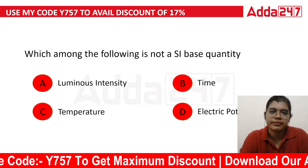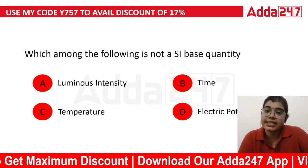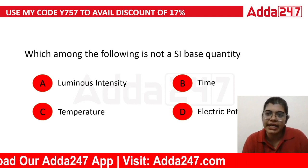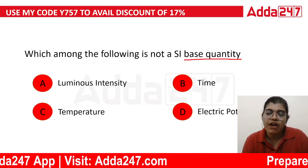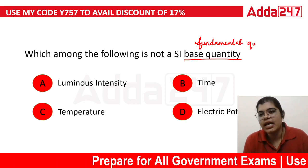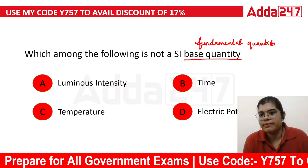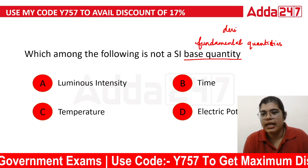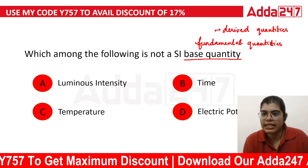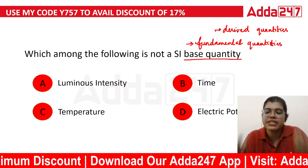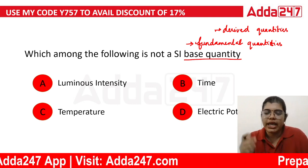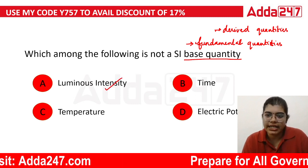Let's move on to the next question. Which of the following is not an SI base quantity? Base quantities are also called fundamental quantities. Fundamental quantities are different from derived quantities. Derived quantities are obtained from fundamental quantities. Let's look at what the fundamental quantities are.